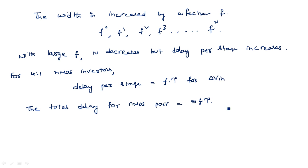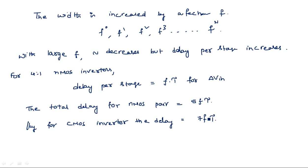Similarly for CMOS inverters, the delay is equal to 7fτ — that is 5 times for pull-up and 2 times for pull-down, giving 5+2 = 7fτ. Here, y is defined as CL divided by ΔCG, which equals f^n. We are taking the ratio between the output load capacitance CL and the input capacitance ΔCG, which equals f^n.